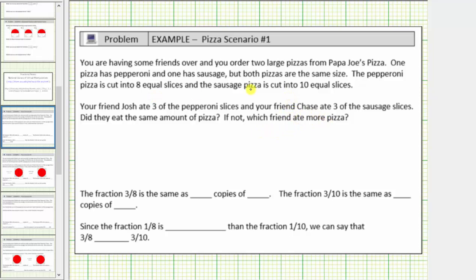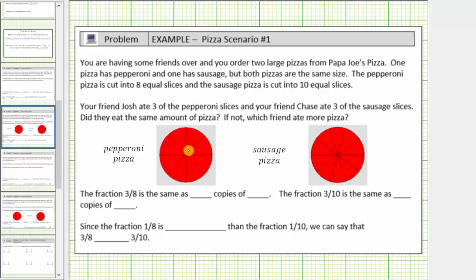Let's begin by modeling the two pizzas. This would be the model for the pepperoni pizza that is cut into eight equal slices. This would be the model for the sausage pizza cut into ten equal slices.